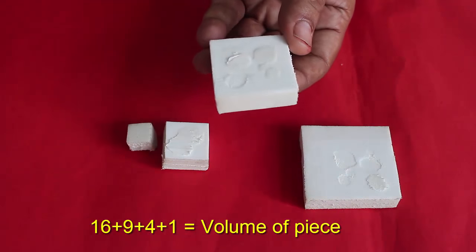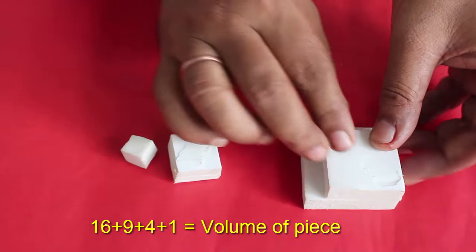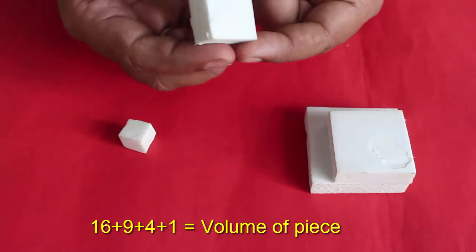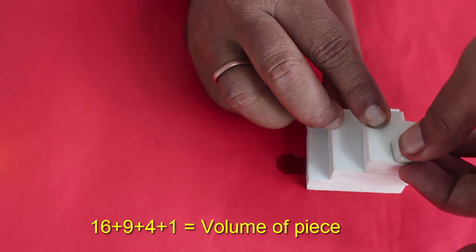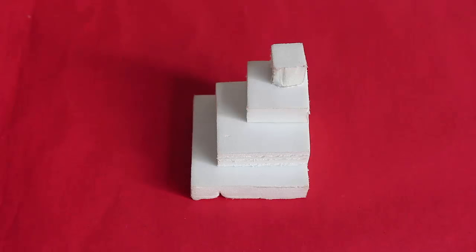So the sum of squares 16 plus 9 plus 4 plus 1 will be the volume of this piece made by joining these 4 squares like this. And we will make 6 such pieces.